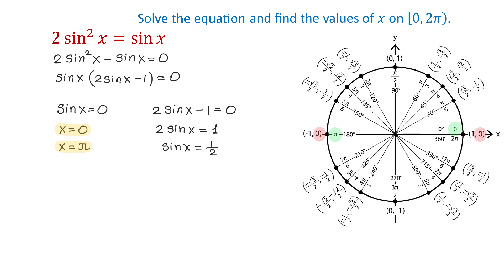And now on the unit circle we need to find the angles where the value of sine is 1 half. And these angles are π over 6 and 5π over 6. So again at these two angles the value of sine is 1 half. Then we will write that x equals π over 6 and x equals 5π over 6.